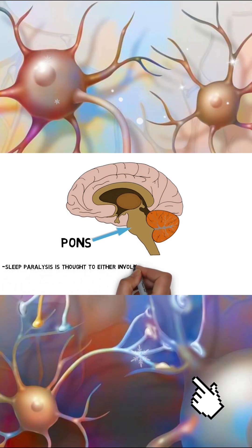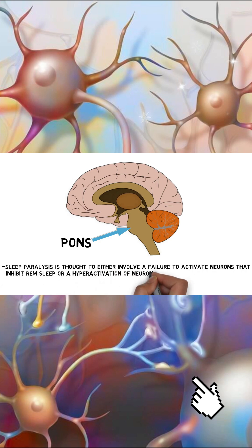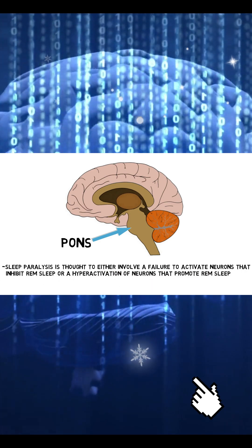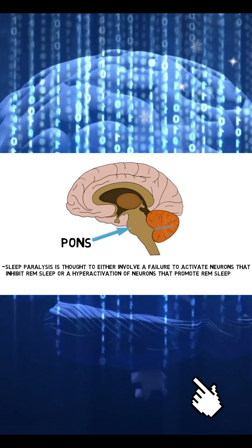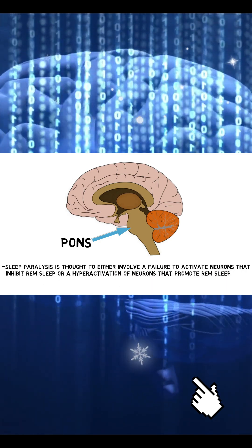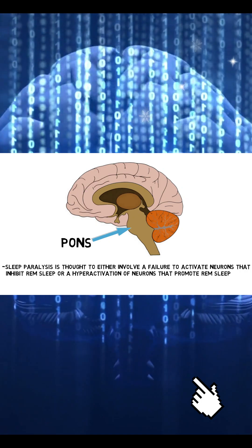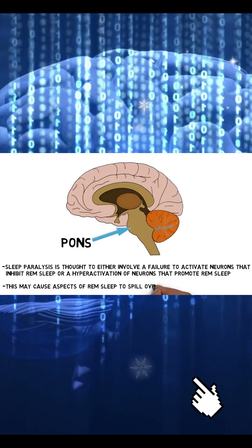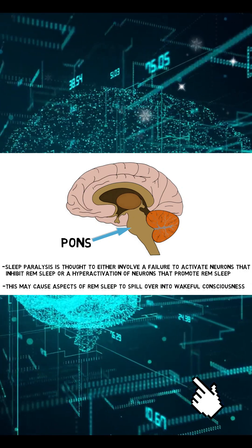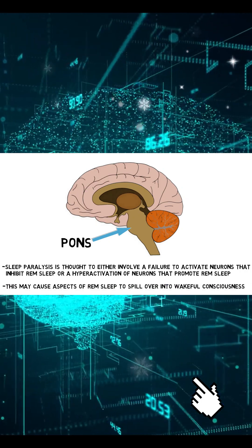Sleep paralysis is thought to either involve a failure to activate neurons that inhibit REM sleep, or a hyperactivation of neurons that promote REM sleep during a time when a person is either waking or falling asleep. Thus, they experience aspects of REM sleep that spill over into wakeful consciousness. And so it is possible that we are...